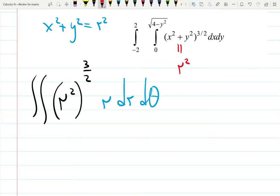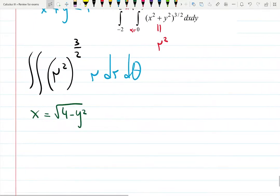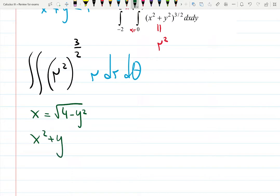So let's write down carefully x equals square root of 4 minus y squared. That means we're working with a circle x squared plus y squared equals 2 squared.